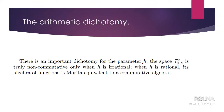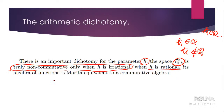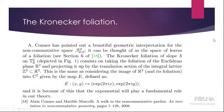There is an important dichotomy for the parameter H-bar: either it is rational or not — it is always real. The space is truly non-commutative only when H-bar is irrational. When H-bar is rational, its algebra of functions is in the appropriate equivalence class of a commutative algebra. This can be interpreted as coming from a geometric construction.